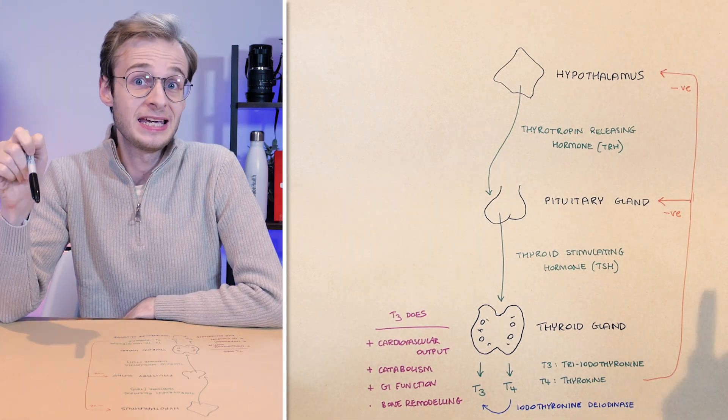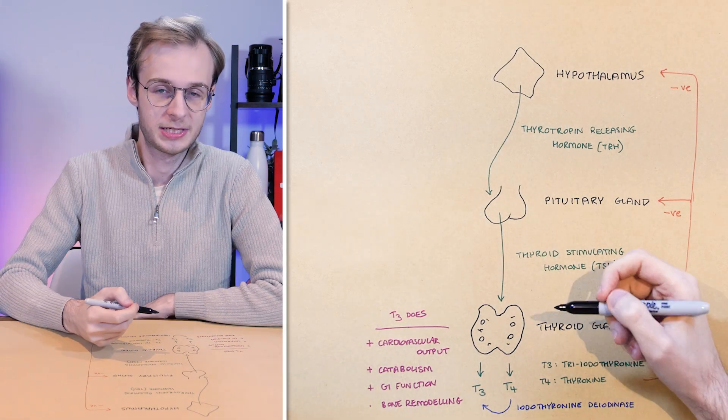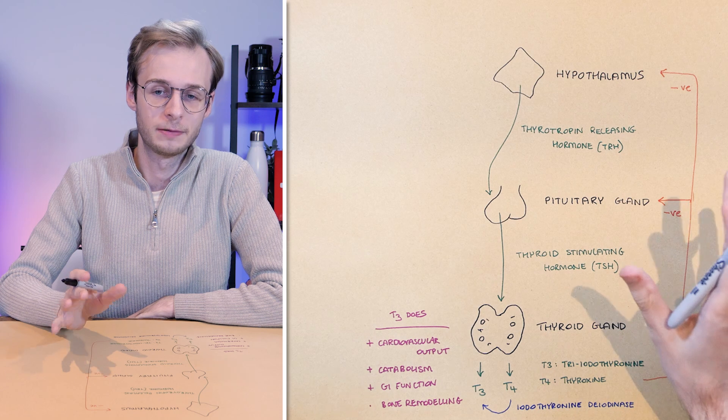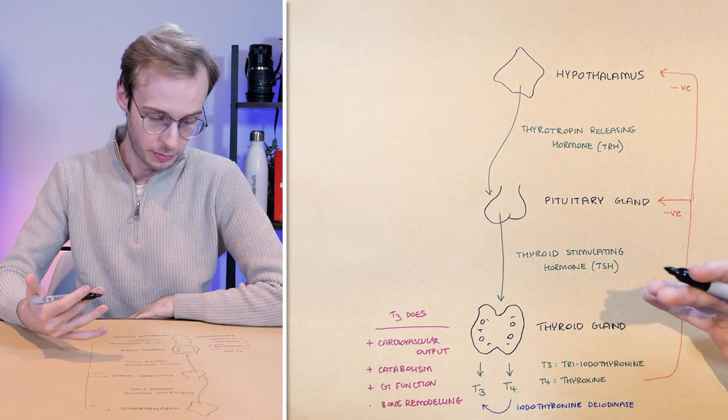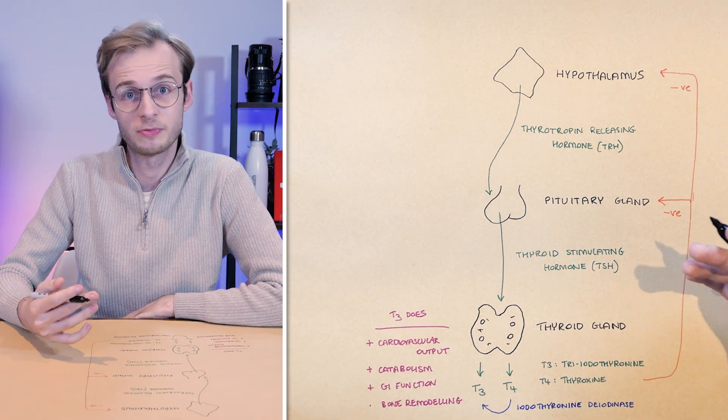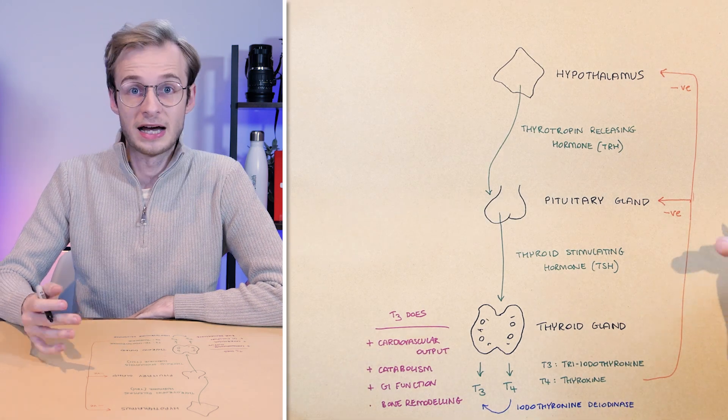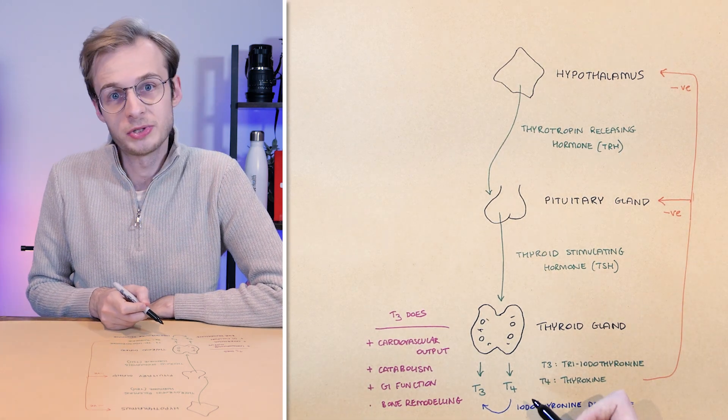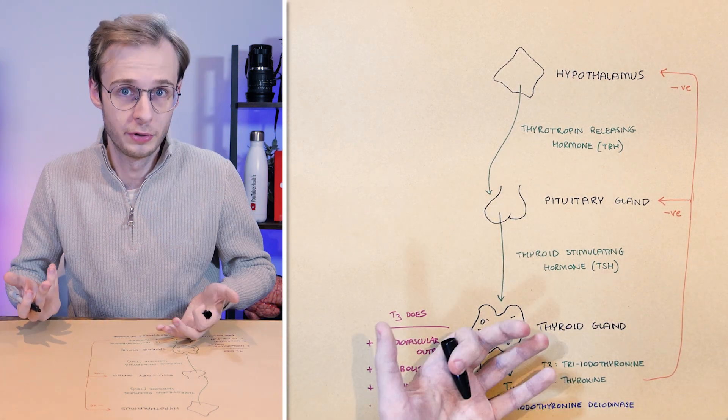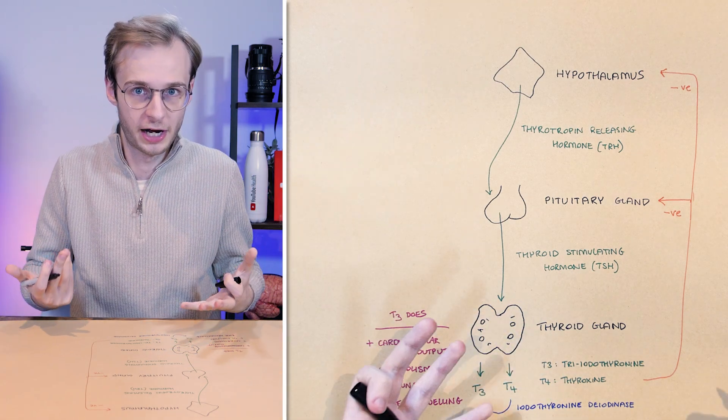Now there are two really key clinical conditions that you need to understand when it comes to the thyroid gland. And this condition of having too much T3 and T4 circulating, we call hyperthyroidism or thyrotoxicosis. Having too little thyroid hormone T3 and T4 we call hypothyroidism.